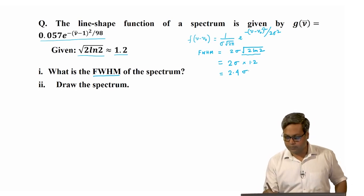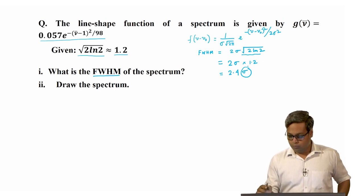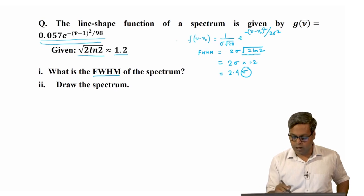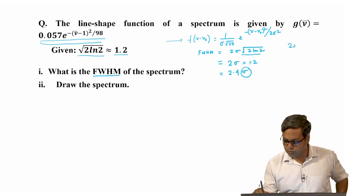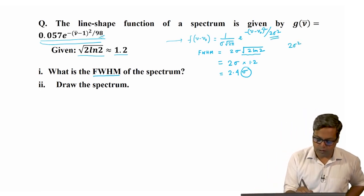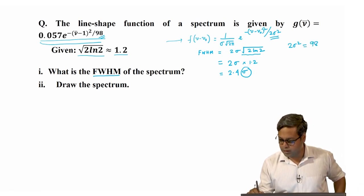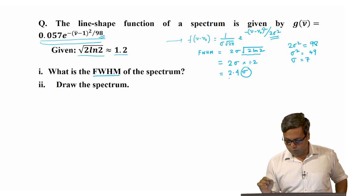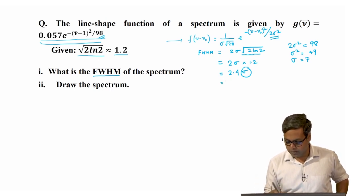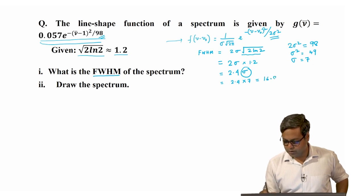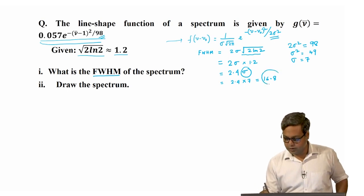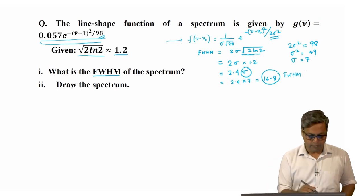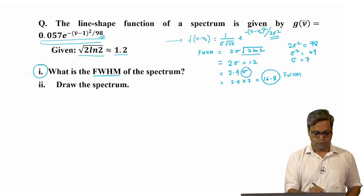Now we need to find the value of sigma. Comparing the given expression with the Gaussian line shape function, we see that 2 sigma squared equals 98. So sigma squared equals 49, or sigma equals 7 — sigma can only be positive. Therefore, the full width at half maximum equals 2.4 times 7, that is 16.8. This is the answer to question number 1.